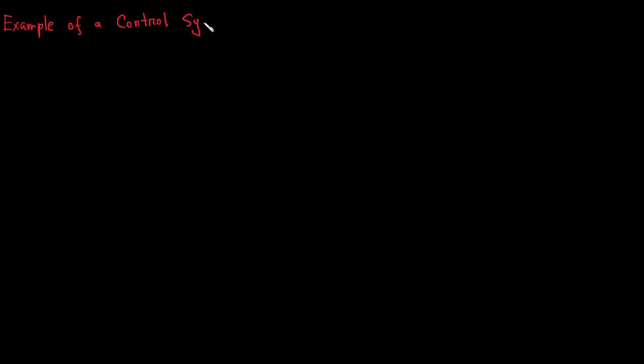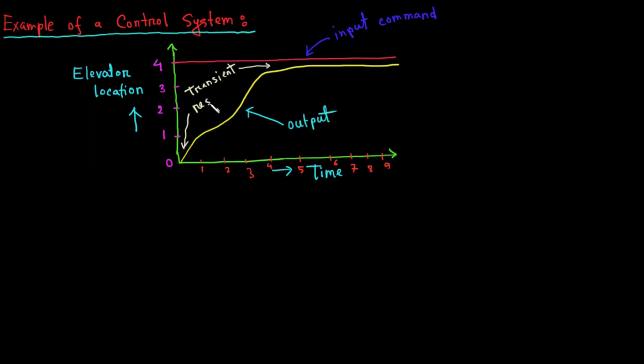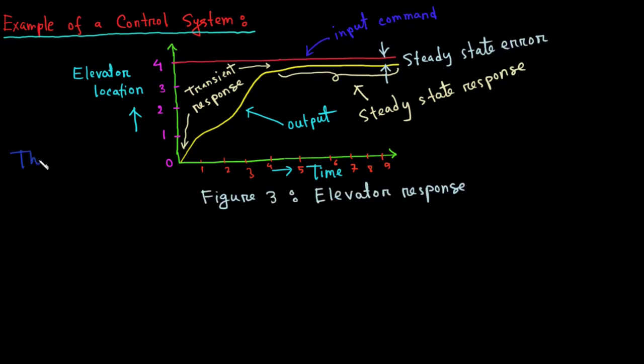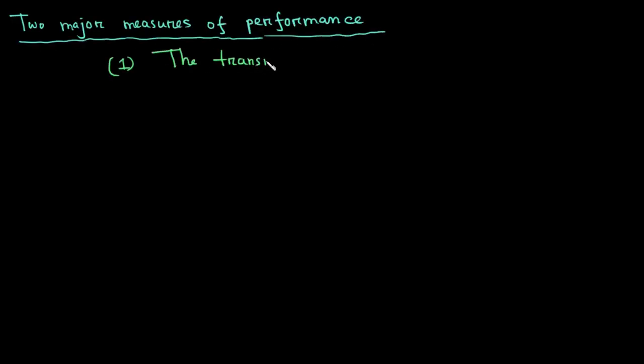For example, consider an elevator. When the fourth floor button is pressed on the ground floor, the elevator rises to the fourth floor with a speed and floor leveling accuracy designed for passengers comfort. The performance of the elevator can be seen from the elevator response curve in figure 3. The push of the fourth floor button is an input that represents our desired output shown as a step function in the figure. Two measures of performance are apparent. Number one is the transient response and the number two is the steady state error.